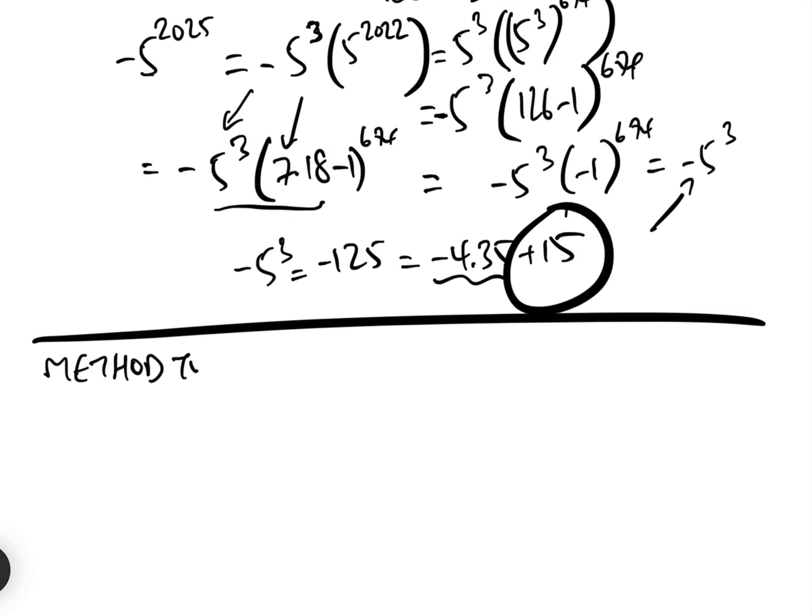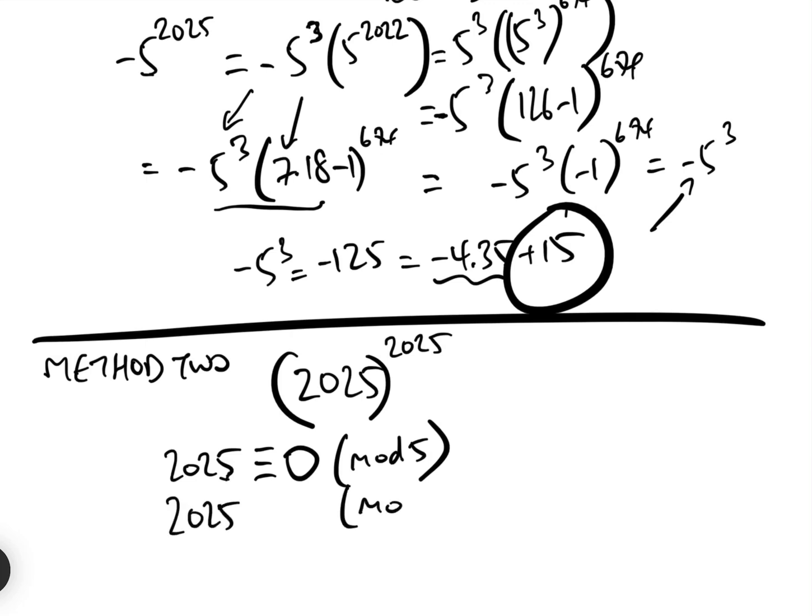Now method 2, we're going to look at 2025. So let's just rewrite the question, 2025 to the 2025. Now we're going to look at 2025. What does it equal mod 5? Well, clearly it equals 0 mod 5, because 2025 is a multiple of 5. Now what about 2025 mod 7? Well, 2025 divided by 7 is equal to 289 remainder 2. And so therefore, 2025 equals 2 mod 7.